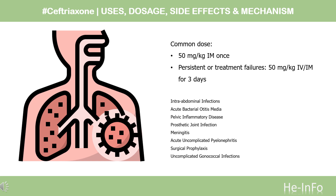Dose. The dose of this medicine will be different for different patients. Intraabdominal infections (complicated, mild to moderate, community-acquired): 1 to 2g per day in a single daily dose or divided every 12 hours for 4 to 7 days, in combination with metronidazole. Acute bacterial otitis media: 50 mg/kg IM once. Persistent or treatment failures: 50 mg/kg IV/IM for 3 days. Pelvic inflammatory disease: 250 mg IM as a single dose with doxycycline, with or without metronidazole, for 14 days. Prosthetic joint infection: 2g IV every 24 hours for 2 to 6 weeks.